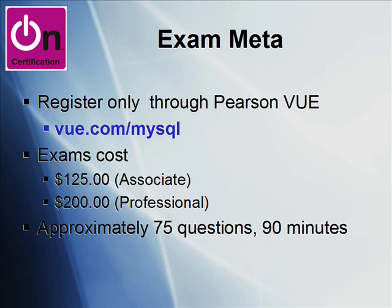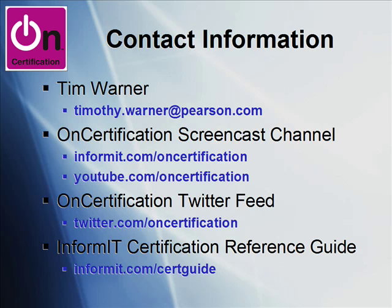The exams are pretty pricey. The Associate will set you back $125 per attempt. The professional-level exams are $200 apiece. Therefore, if you want to become a DBA, that's going to cost you $400 for the two exams plus $125 for the Associate — $525 total — not even counting any instructor-led training or books. The exams are straightforward computer-based tests of approximately 75 questions each, 90 minutes. Basic bread-and-butter tests with no real curveballs.